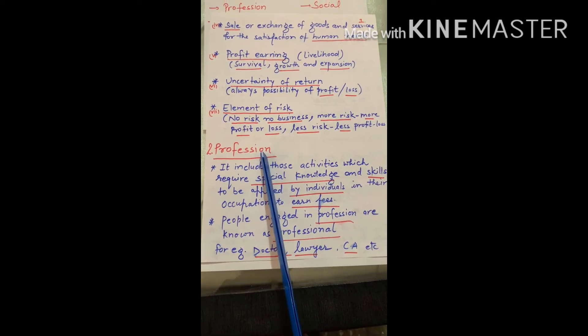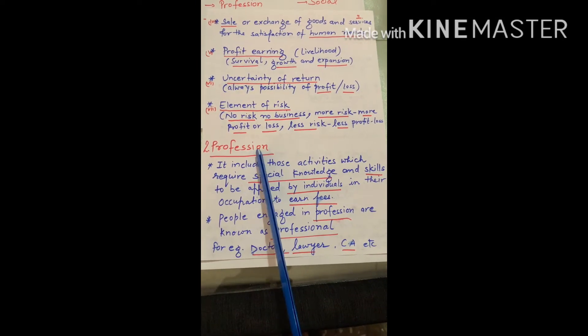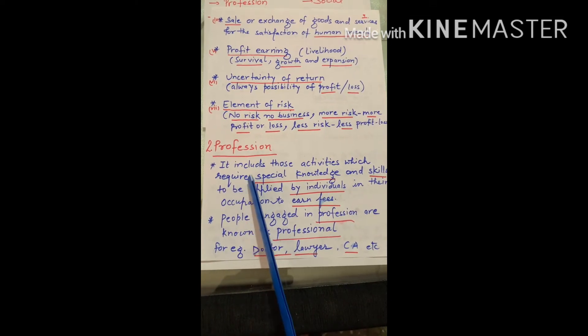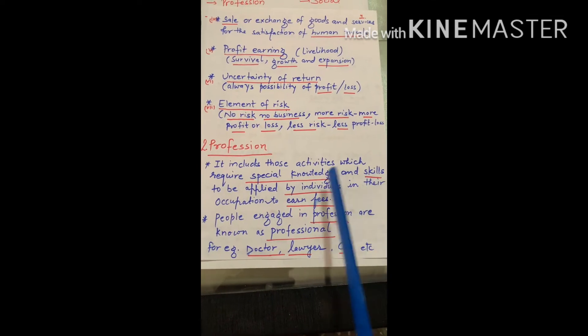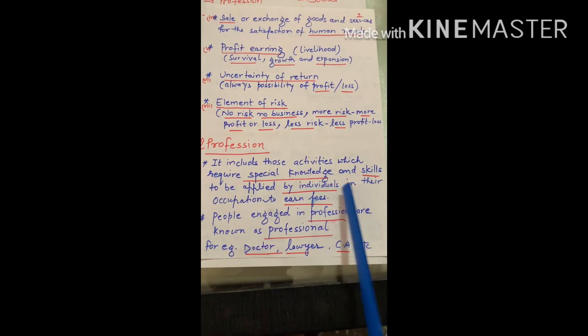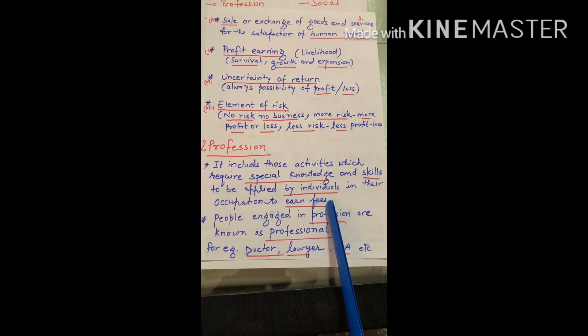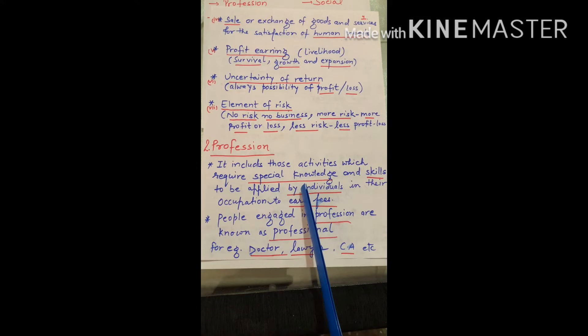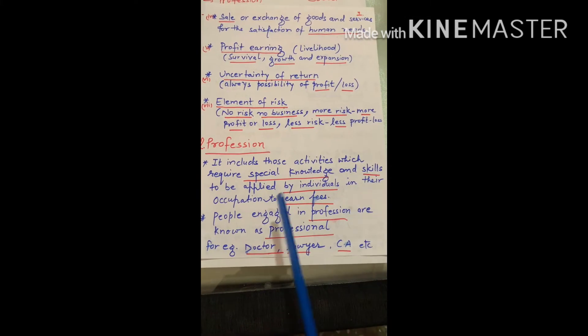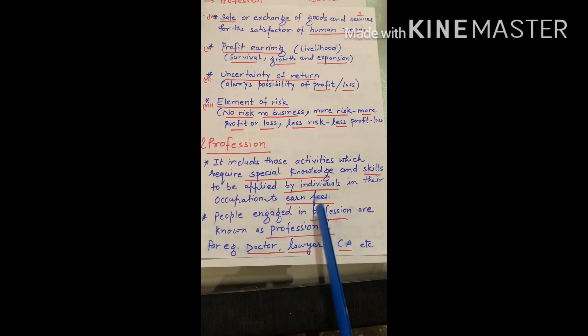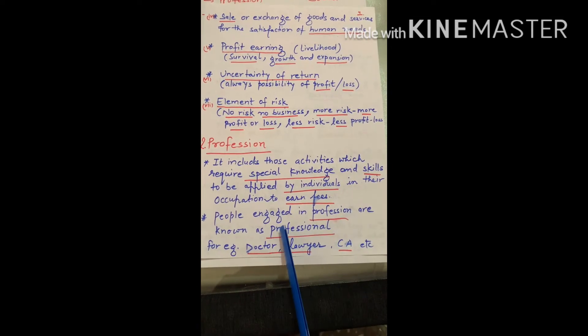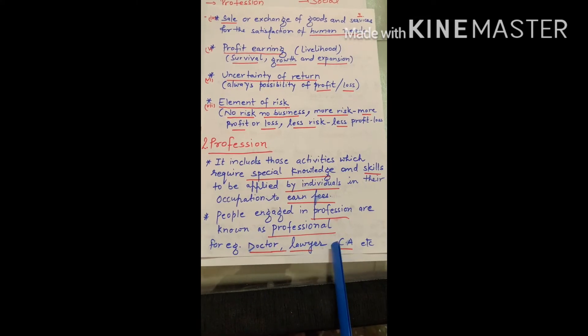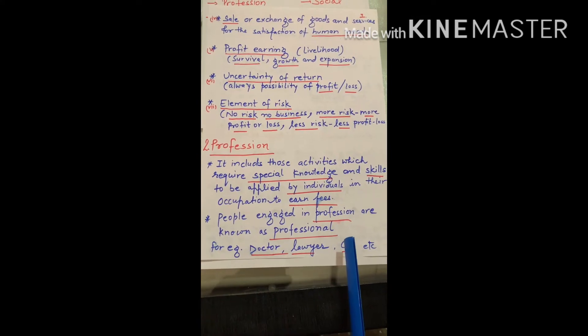Second is profession. It is also an economic activity. Profession is where we require special knowledge and skills to be applied by individual in their occupation to earn fees. If you have any profession, you need to have special knowledge and skills. And the person who is professional is called professional. For example, doctor, lawyer, CA. These all are the professionals.